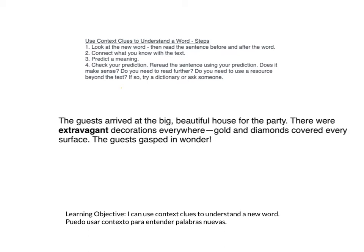My predicted meaning: I predict that the meaning is expensive or really, really nice. Now step four — check your prediction. Reread the sentence using your prediction. 'There were very nice decorations everywhere. Gold and diamonds covered every surface.' Or: 'There were expensive decorations everywhere. Gold and diamonds covered every surface.' Does it make sense? Yeah, I think it does. Do you need to read further? No, I think I figured it out — I found a meaning that works in context. Do I need to use a resource beyond the text? If so, try a dictionary or ask someone. I think I'm good.